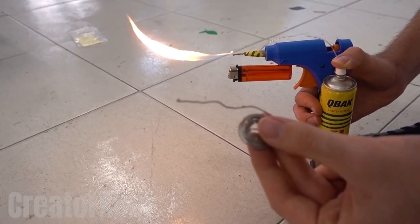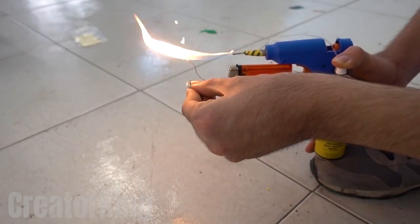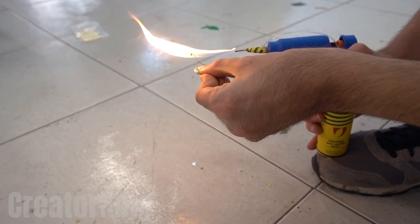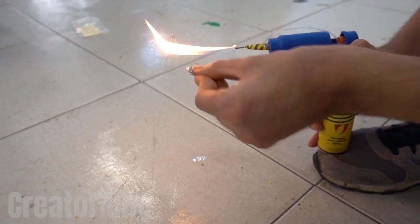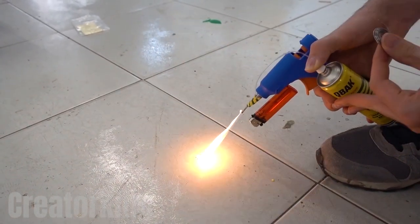Seriously, we can use it to melt solder in case we don't have a soldering iron. Look how quick it is. But don't get your fingers too close because you could turn them into toasted snacks.